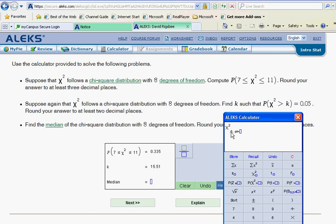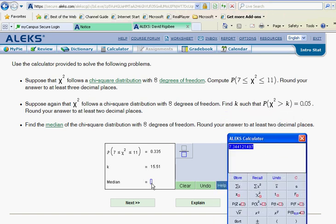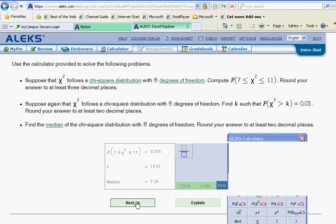Put our degrees of freedom 8 and that's what you do. So the median, simply go with 0.5 for your area under the curve. Calculate that. This will change for different values of degrees of freedom, 7.34. We want two decimal places, so we are good to go. And that's the chi-square distribution.